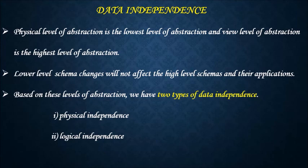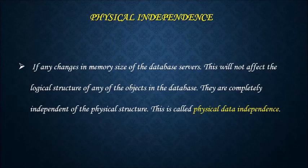Based on this level of abstractions, we have two types of data independence: one is physical data independence, another one is logical data independence. Suppose there was a change in the memory size of the database servers. This will not affect the logical structure of any data objects in the database. They are completely independent of the physical structure. This is called physical data independence.